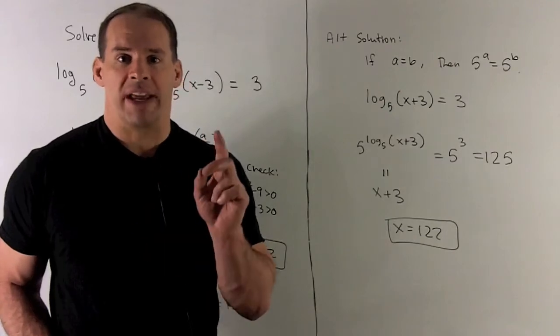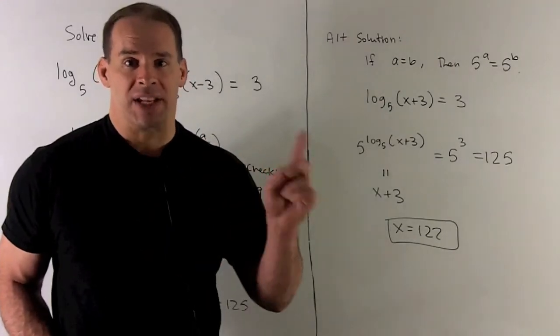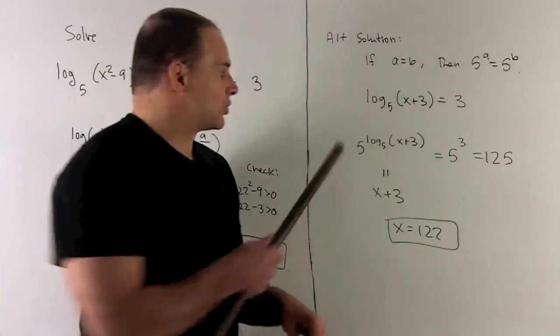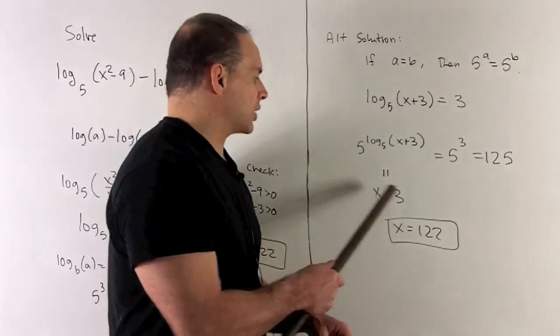If I take 5 raised to the log base 5, that's going to cancel. So this term here is going to collapse to x plus 3.